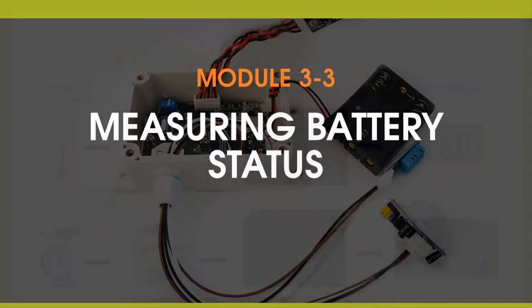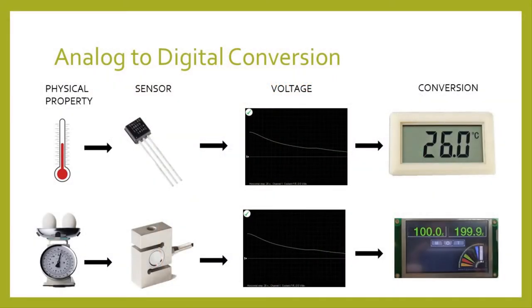But first, let's talk a bit about analog-to-digital converters. An analog-to-digital converter is a bridge between the physical world and computing world. It allows us to quantify physical properties and turn them into data that we can then process.